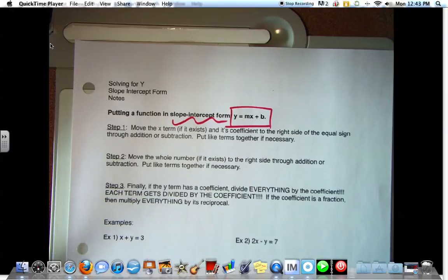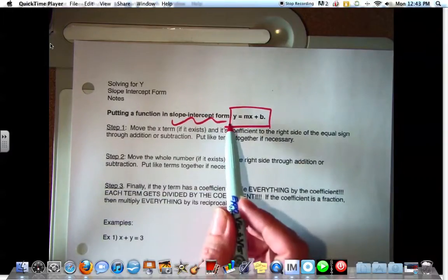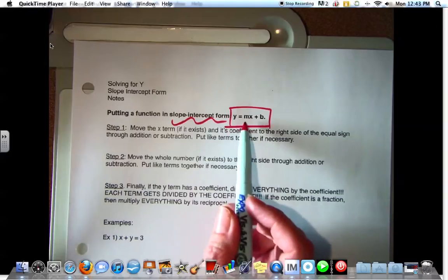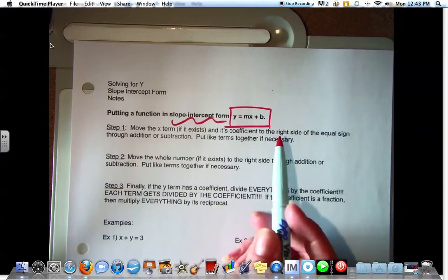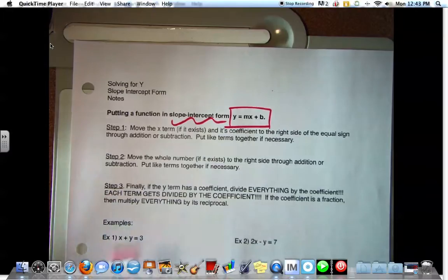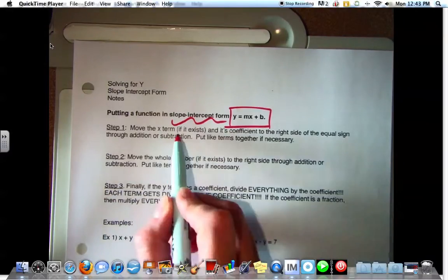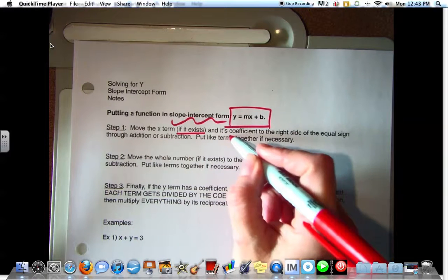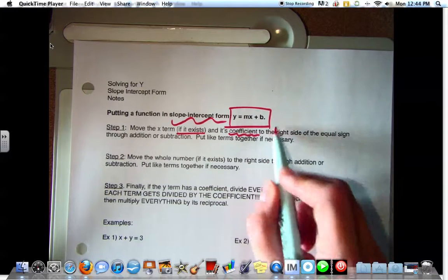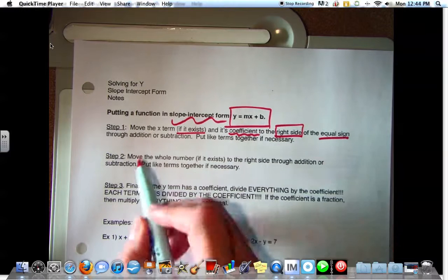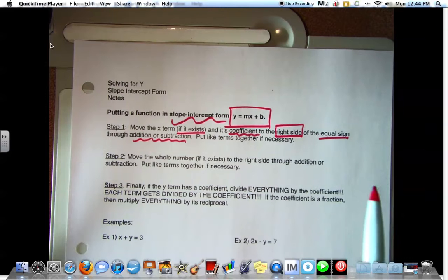We're doing things that are similar to what we did a few weeks ago when we were solving an equation. We're moving things from side to side so that we can get Y by itself on the left-hand side, the X and the coefficient in front of the X, and the constant over on the right-hand side. So we have three different steps.